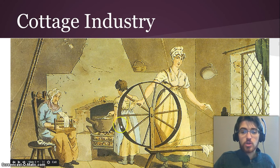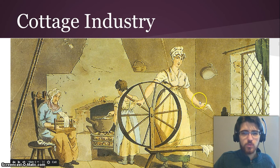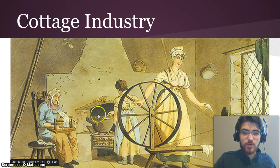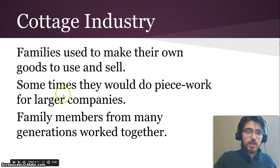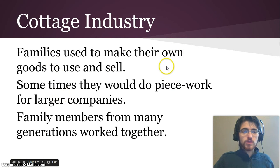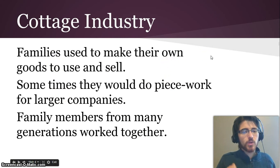They may be making it into their own clothes. They're spinning what is probably wool and getting all the gross stuff out of the wool before it can even be spun. It's a whole process that they would do together, generally to make things for themselves. Families used to make their own goods to use and sell, and sometimes they would do piece work for larger companies — like a shirt here, a shirt there.